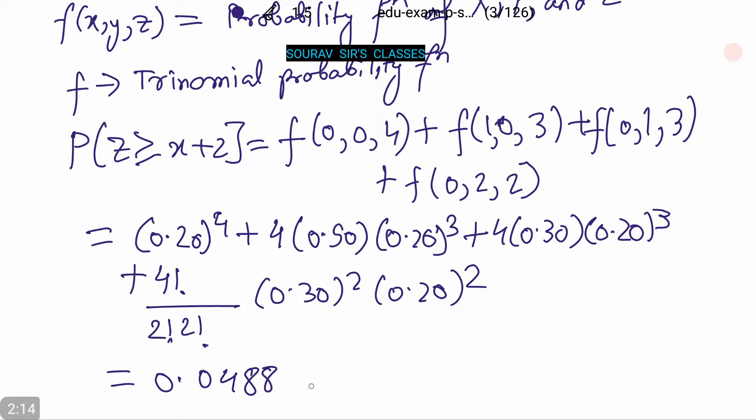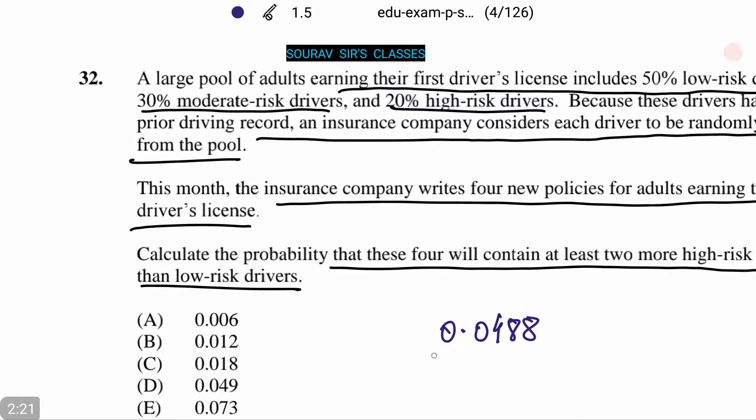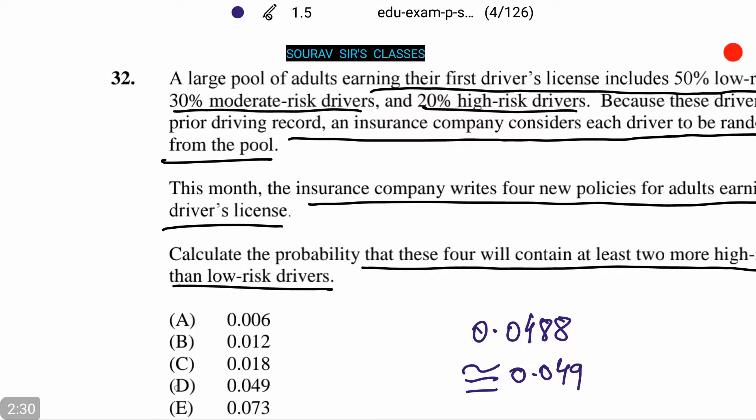Let us see which option this corresponds with. Let us round off, and it comes to 0.049, that is option number D.